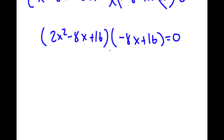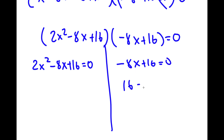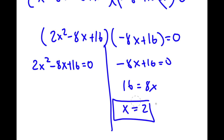So now this gives me two equations. I have 2x squared minus 8x plus 16 is equal to 0, and I have negative 8x plus 16 is equal to 0. For negative 8x plus 16 equals 0, I get 16 is equal to 8x, and x equals 2. So this is one solution.